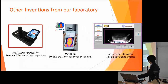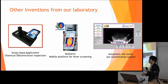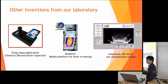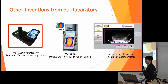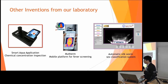For other information about our lab: we have something called the Smart Aqua application for chemical concentration inspection. When you measure the concentration of a chemical, you put a test kit in and it produces a color change. Unfortunately, the color chart that comes with the test kit can be interpreted differently by different people. So we made an application that can read the color more correctly than the human eye. The next one is a mobile platform for fever screening, using an IR camera for mobile phones that allows us to detect a patient's face and measure their temperature.